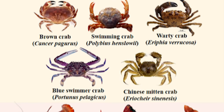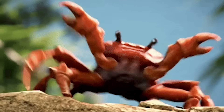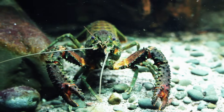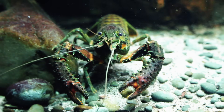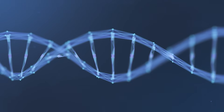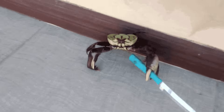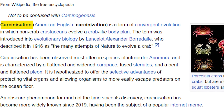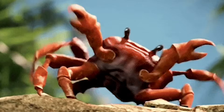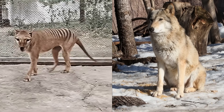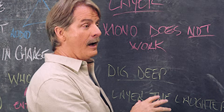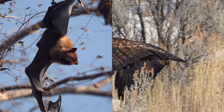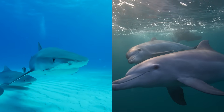Scientists had to make these categories because they kept finding animals that looked exactly like crabs, but when they checked the DNA it turned out they weren't related to crabs at all — they just happened to end up with the same body design. This is convergent evolution: when completely different animals end up with the same solution to a problem. It happens in nature all the time — birds and bats both have wings even though they're not related, sharks and dolphins both have the same body shape even though one's a fish and one's a mammal.